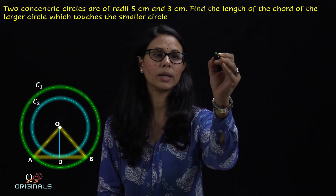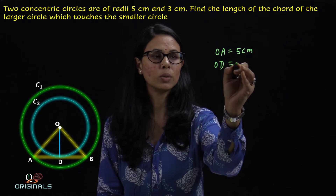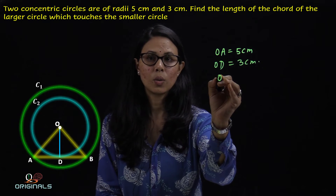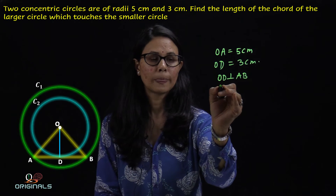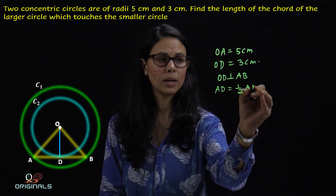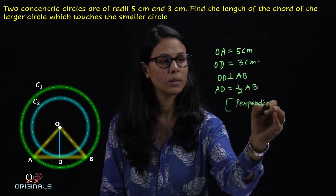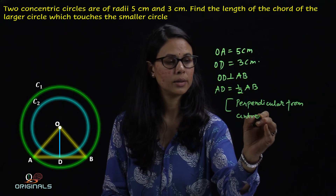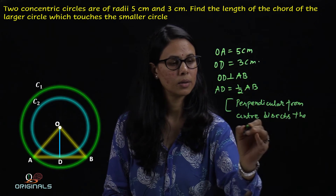So, OA is equal to 5 cm and OD is equal to 3 cm. Since OD is perpendicular on AB, so AD is equal to half of AB. इसका reason: perpendicular from centre bisects the chord.